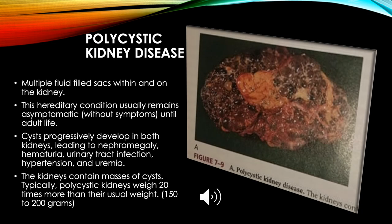Polycystic kidney disease involves multiple fluid-filled sacs within and on the kidney. This hereditary condition usually remains asymptomatic until adult life. Cysts progressively develop in both kidneys, leading to nephromegaly, hematuria, urinary tract infection, hypertension, and uremia. Polycystic kidneys typically weigh 20 times more than normal, approximately 152–200 grams.